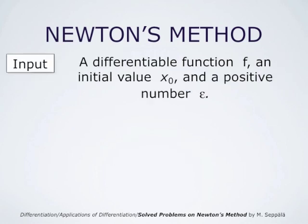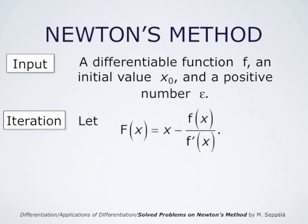This can be formulated as follows for a computer program. The input is a differentiable function f, an initial value x0 for the solution of the equation f of x equals 0, and a positive number epsilon. The role of this positive number epsilon is to tell us when we should stop the iteration. The iteration step is: starting with the function lowercase f, we form the function capital F, which takes the value x minus f(x) divided by f'(x).